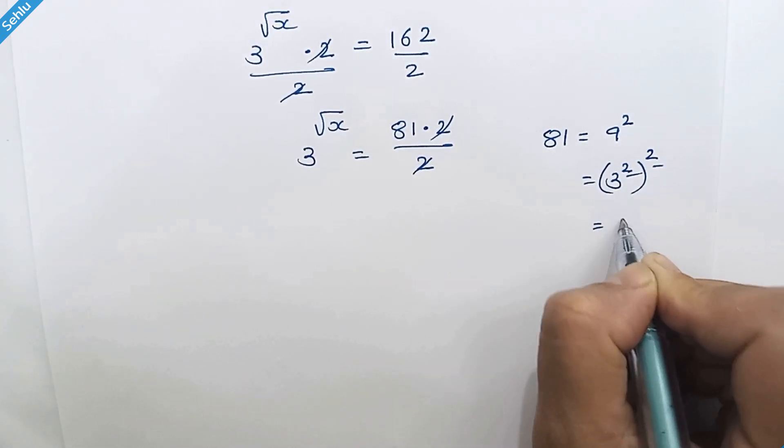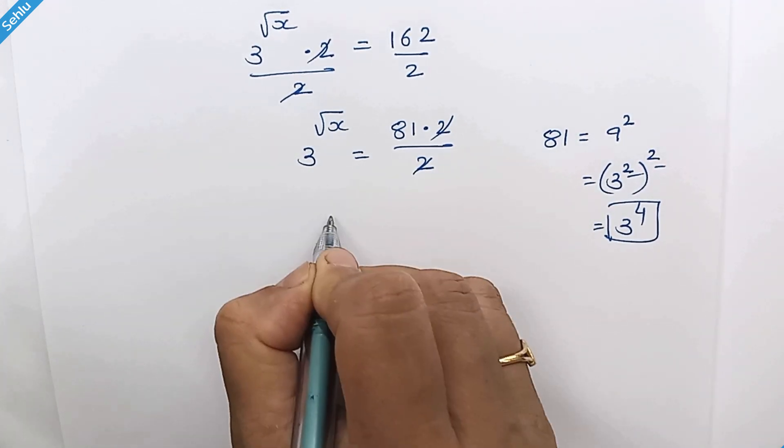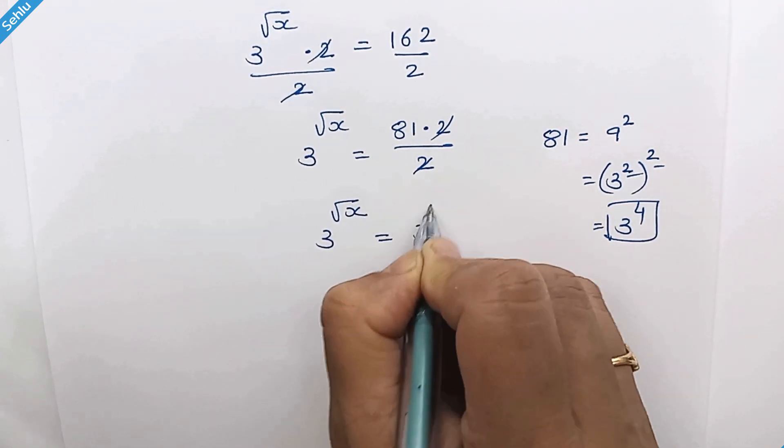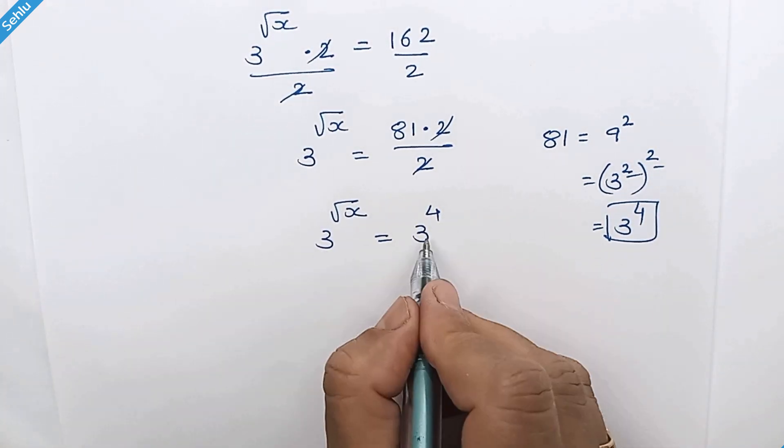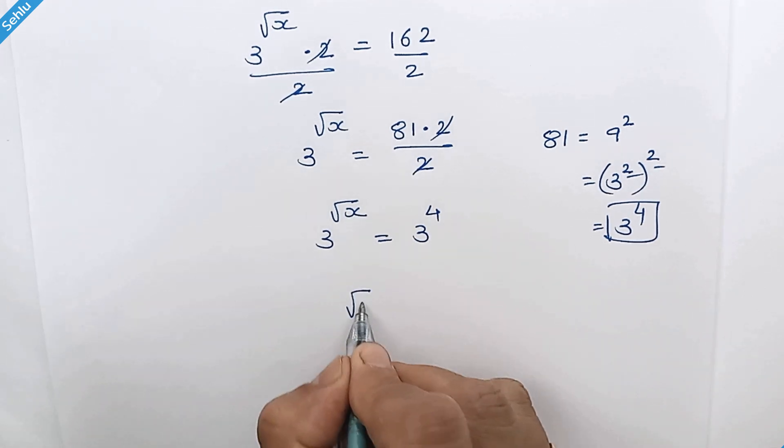This 2 can multiply, so it will be 3^4. So here we can write 3^√x = 3^4. Since 3 and 3 are the same at both sides, we can compare the exponents: √x